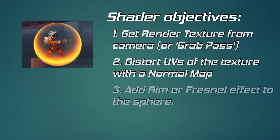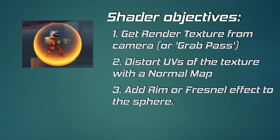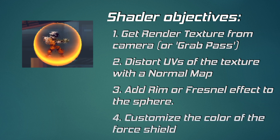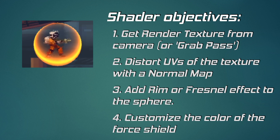Then we want to add a rim effect around the edges of our shield object, and for aesthetic purposes we will customize the shield by changing the color and scrolling speed of the normal map. With these objectives we can now jump right into shader code.